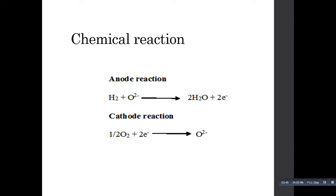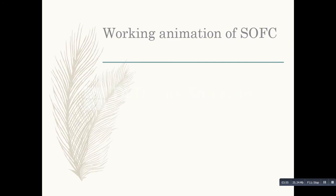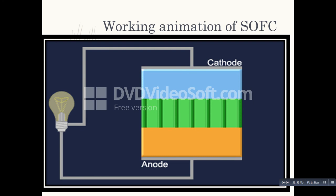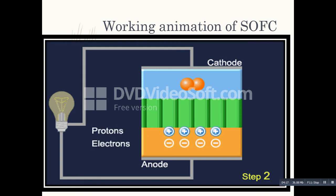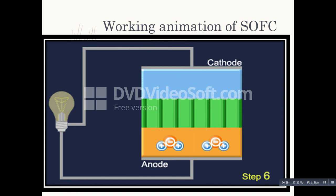This is also a working diagram of the solid oxide fuel cell, and here is one of the best working animations of the solid oxide fuel cell. There are two electrodes — anode and cathode — and in between there is electrolyte; both electrodes act as a catalyst. Oxygen is supplied towards the cathode side and hydrogen towards the anode side. At the anode, oxidation takes place and produces protons and electrons. The electrons move through the external circuit to produce electricity and move toward the cathode, where they combine with oxygen to form oxide ions.